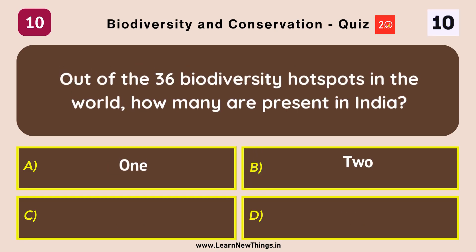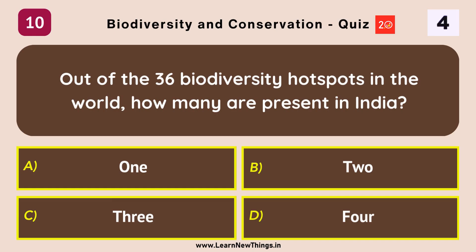Out of 36 biodiversity hotspots in the world, how many are present in India? 4.